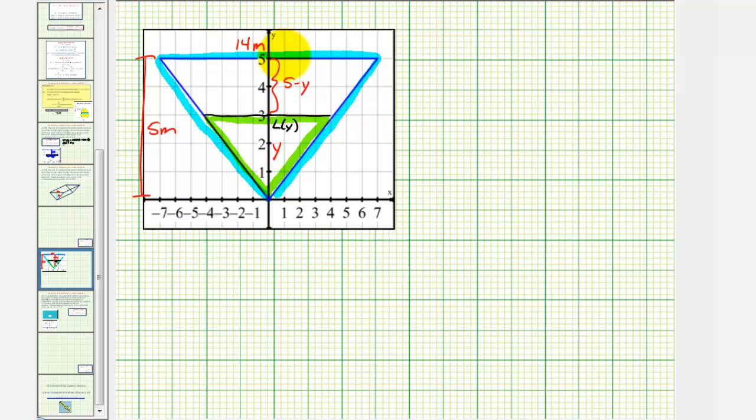And because these triangles are similar, we'll now set up a proportion to find L(y). The height of the large isosceles triangle 5 is to the height of the smaller isosceles triangle y, as the base of the large isosceles triangle 14 is to the base of the smaller isosceles triangle, which is L(y).